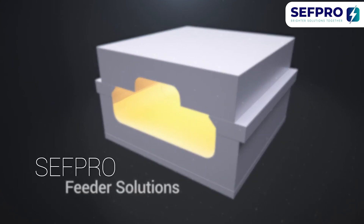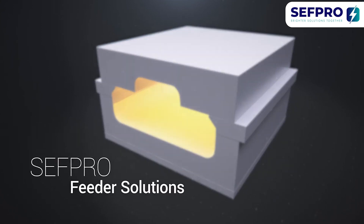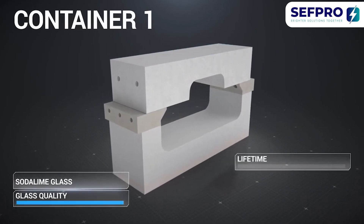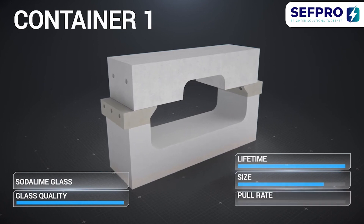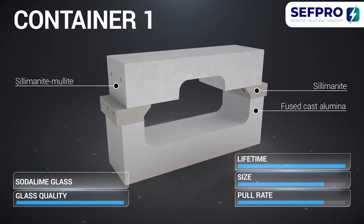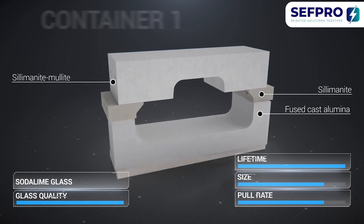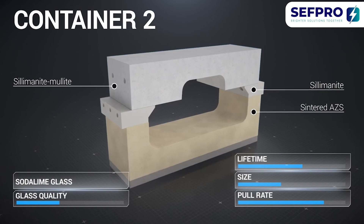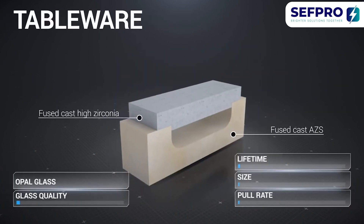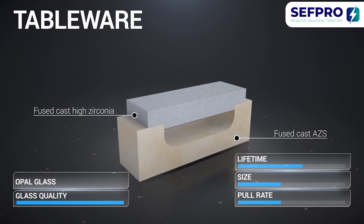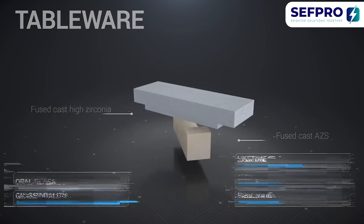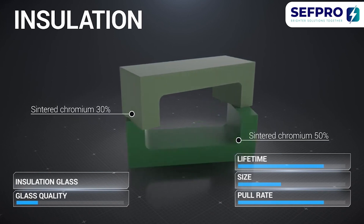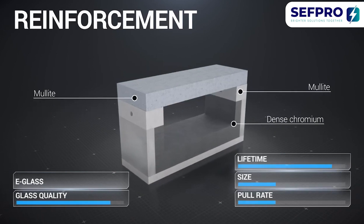At Sefpro, we are able to provide you with a tailor-made solution to ensure the optimum performance of your feeder. Our wide range of fused, cast, and sintered products is a real asset to select the refractory solution most adapted to your application. With our plants based all over the world, we are able to supply you with all kinds of refractory materials. Get in touch with our sales and marketing teams and let us help you select the right solution for your feeder.